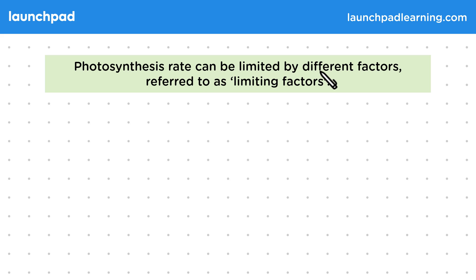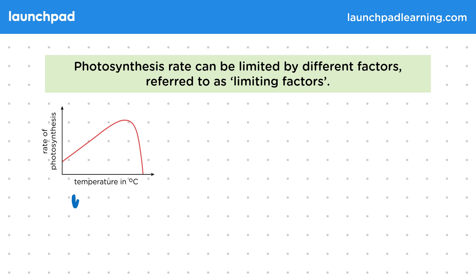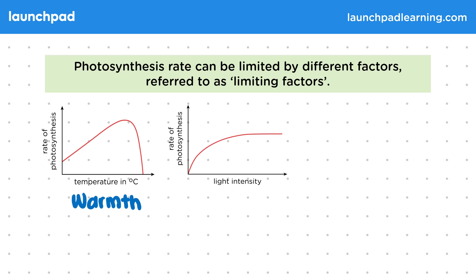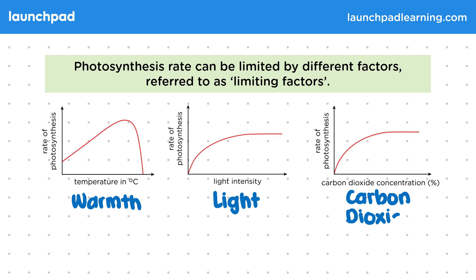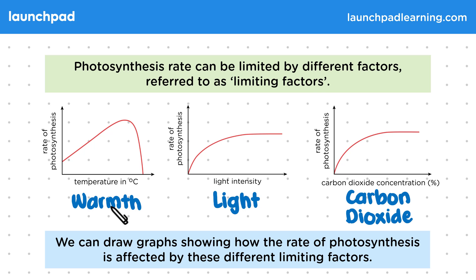Photosynthesis rate can be limited by different factors, referred to as limiting factors. These limiting factors are warmth, light, and also carbon dioxide. We can draw graphs showing how the rate of photosynthesis is affected by these different limiting factors.